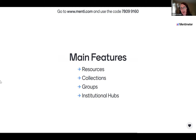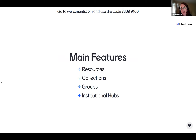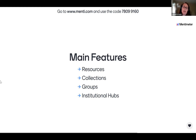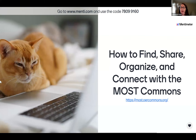The main features of MOST Commons are: resources — either created on the site or linked to it; collections — ways to curate resources around specific subjects or topics; groups — the main way to connect, which anyone registered can create and use within or across institutions; and institutional hubs — special pages that group together collections, groups, and resources specific to an institution. I'll be talking about how these features help you find, share, organize, and connect.